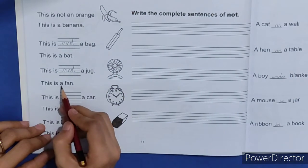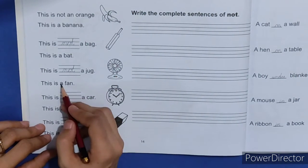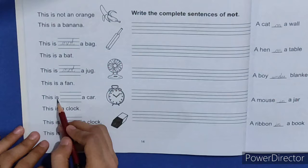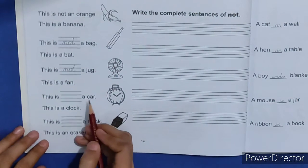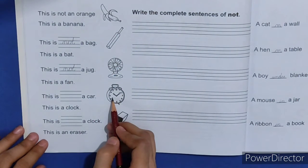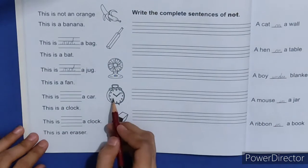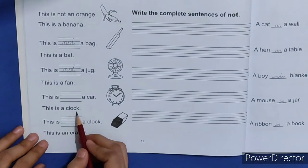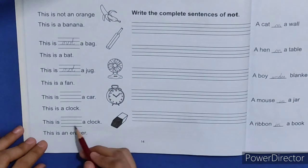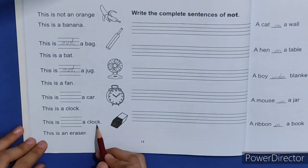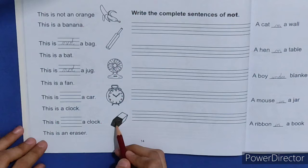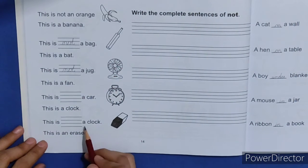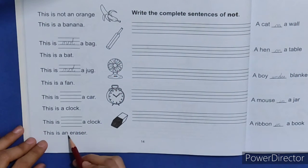This is a fan. Ye fan hai. This is dash a car. Ye car hai piyare bacho. Nahi, ye car nahi hai. This is not a car. This is a clock. This is dash a clock. It is a clock. This is not a clock. This is an eraser.